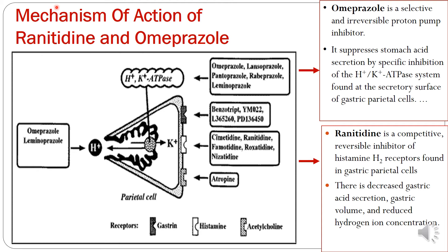There are a few inhibitors of HCl secretion which are used as medicines and act via different mechanisms. The commonly used inhibitors are ranitidine and omeprazole. The gastric mucosal lining has various receptors — gastrin receptor, histamine receptor, and acetylcholine receptors — on the parietal cell, and these inhibitors act on one of them to inhibit HCl secretion.